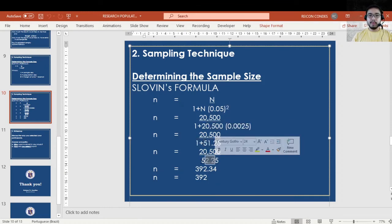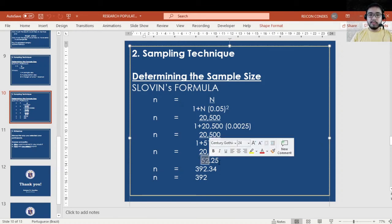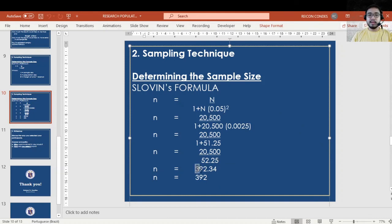You got 52.25, and then 20,500, your total population, you divide by 52.25, and then you get 392.34.